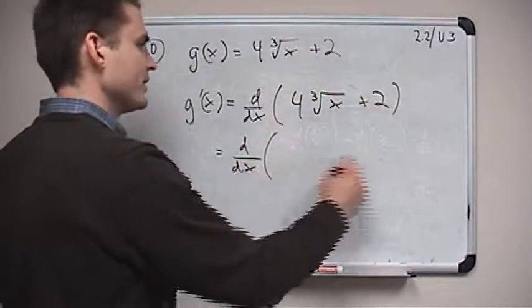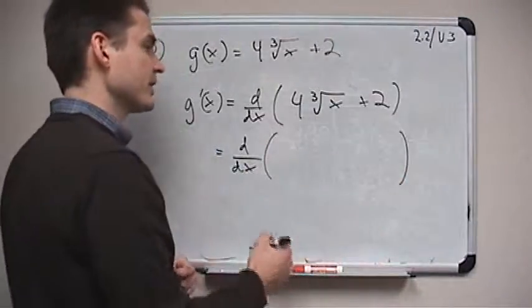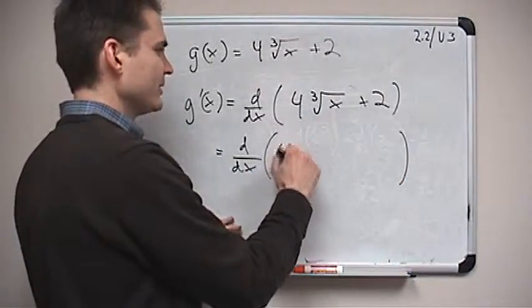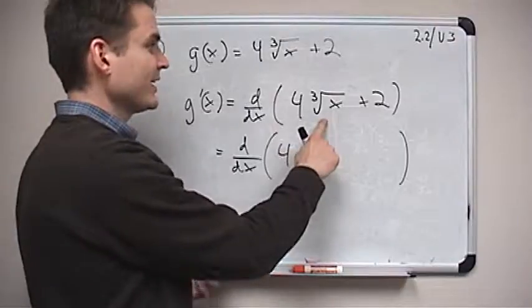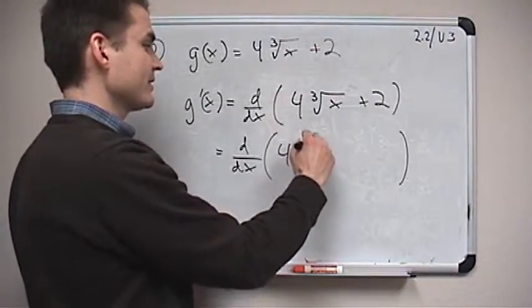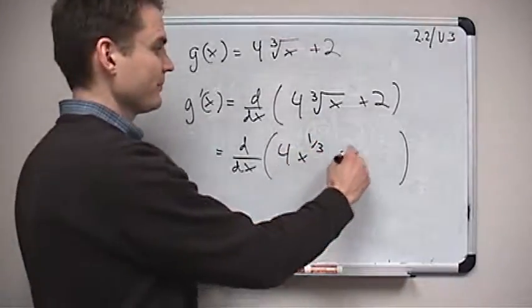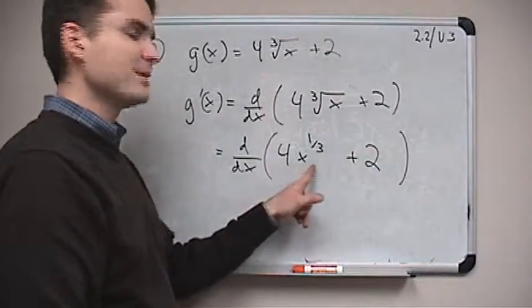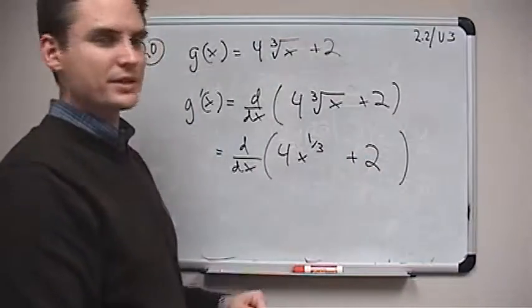Well, actually not a bad one at all now that we've done that last one, which was pretty long. The main thing we need to do here is write this as x to a power. It's the cube root of x, so that's x to the power 1 third. So really the function we have is 4 times x to the power 1 third plus 2.